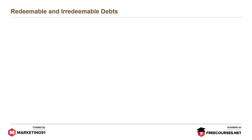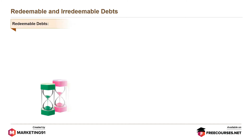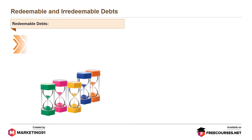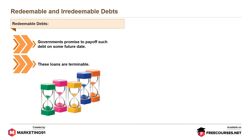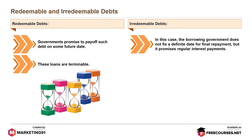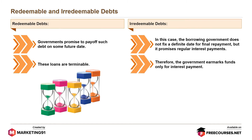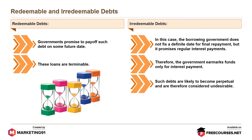Redeemable debts: In the case of redeemable debts, governments promise to pay the debt on some future date. These loans are terminable. Irredeemable debts: The borrowing government does not fix a definite date for final repayment, but promises regular interest payments. Therefore, the government earmarks funds only for interest payment. Such debts are likely to become perpetual and are therefore considered undesirable. The maturity period of irredeemable debts is not fixed.